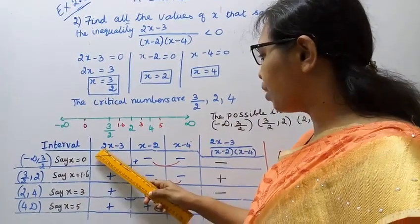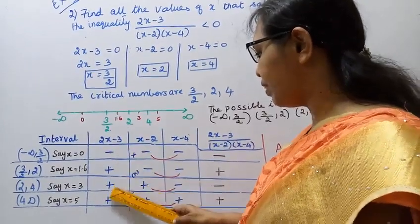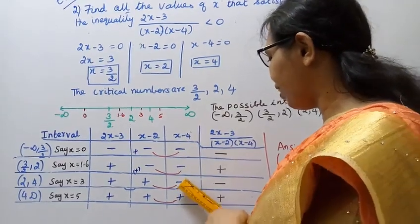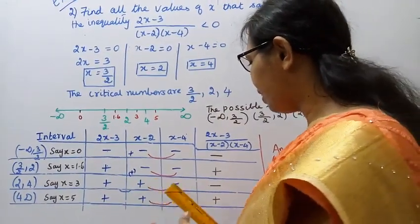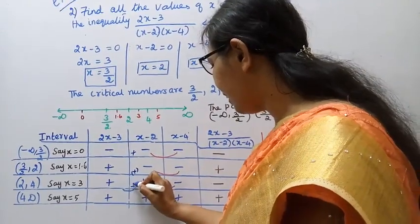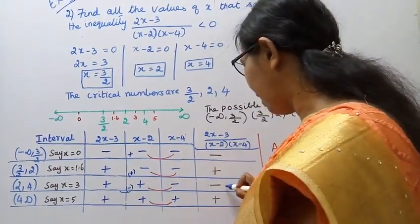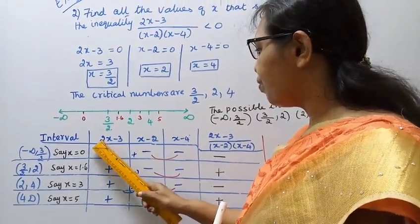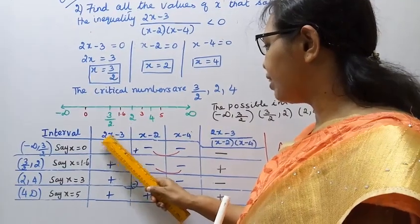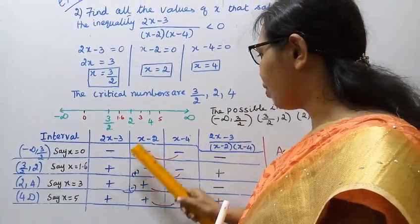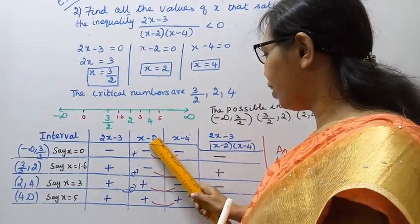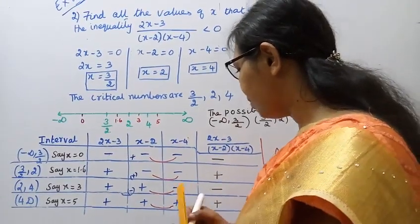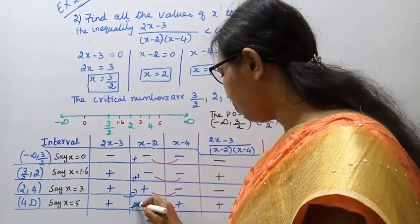For the interval 2 to 4, take x = 3. Then 2(3)-3 = 6-3 = +3, sign is plus. 3-2 = +1, sign is plus. 3-4 = -1, sign is minus. For the interval 4 to infinity, take x = 5: all factors are positive, giving plus, plus, plus.